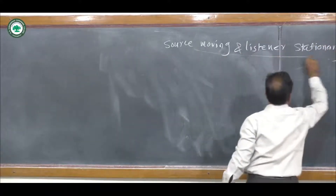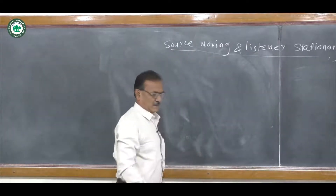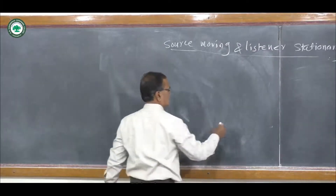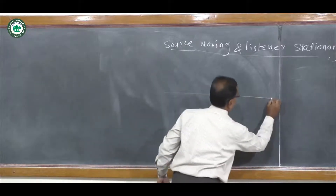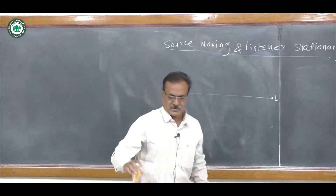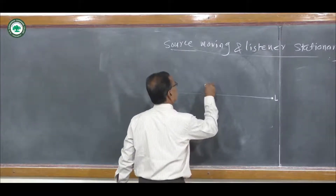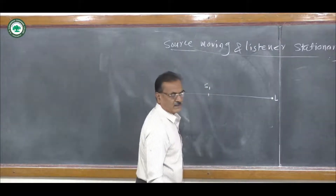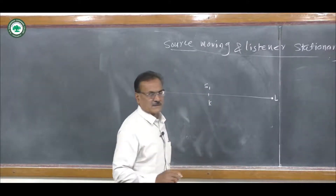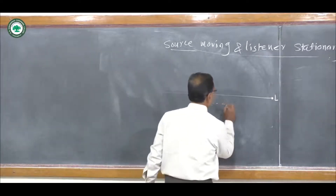First condition in Doppler effect: source moving and listener stationary. Suppose the listener is stationary at a point, and the source S1 is at a certain distance D from the listener. After some time, the source moves to a second position S2, covering a distance Vs × T0. The distance of S2 from the listener is then D plus Vs × T0.